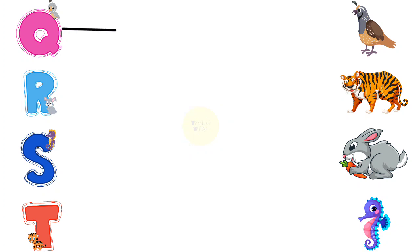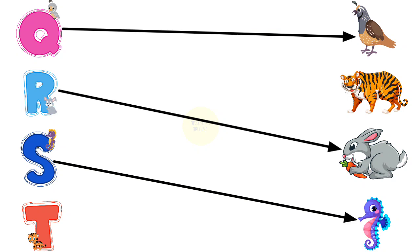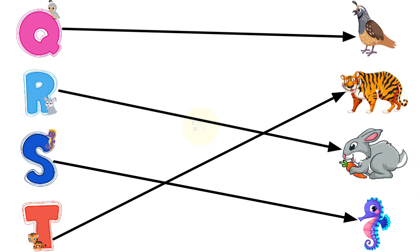Q for quail, R for rabbit, S for seahorse, T for tiger.